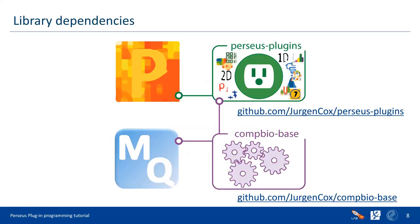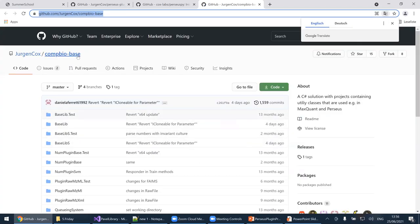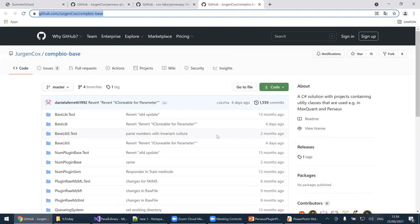MaxQuant and Perseus, from a developer's perspective, share a common code base. There's a library called combiobase which contains a lot of tools — data analysis and data processing related — and both MaxQuant and Perseus use it. Once you include some functionality in that code base, it's accessible everywhere in both Perseus and MaxQuant. What's really important is that this code base is open: you can read it, everything is open code.